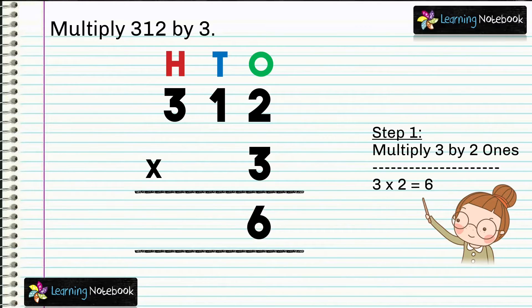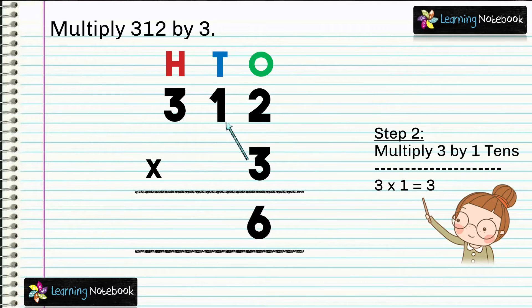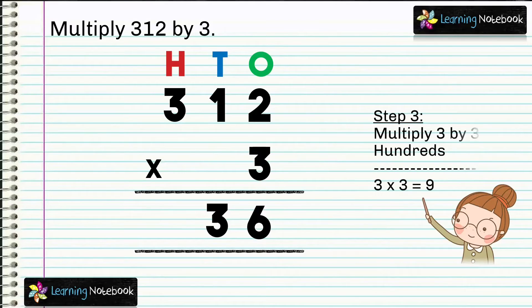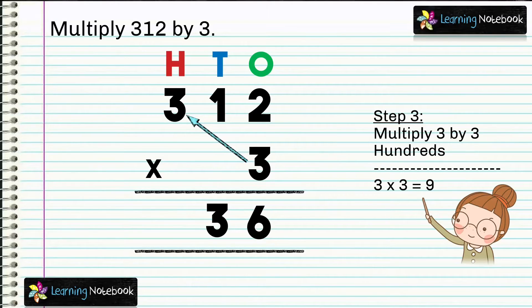In the next step, we will multiply 3 by 1 tenth. Which means we will do 3 into 1 equals to 3. Now in step 3, we will multiply 3 by 3 hundreds. 3 into 3 equals to 9.